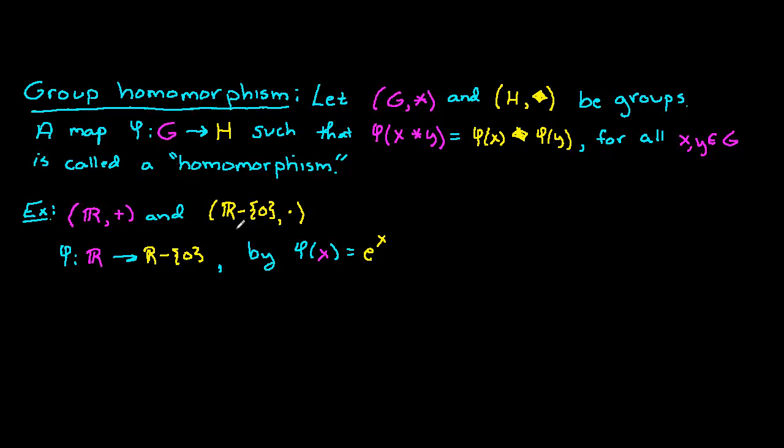I've put our items in color so we can see what's going on. Our input x comes from the real numbers, which is a group under addition. Our output φ(x) ends up in the yellow group, the real numbers take away 0, together with the binary operation multiplication.